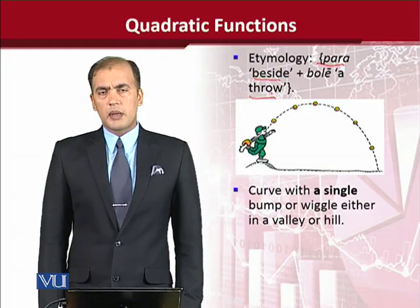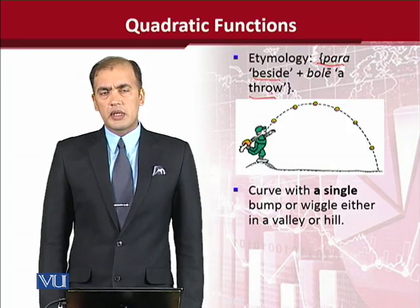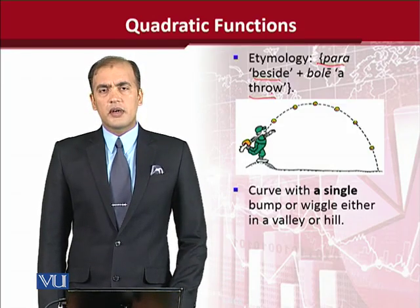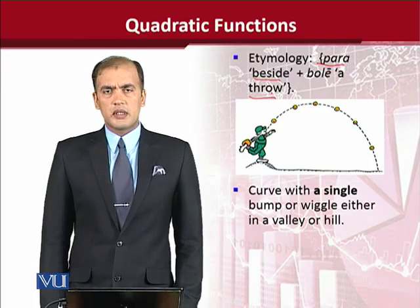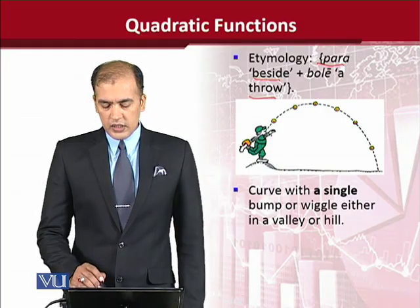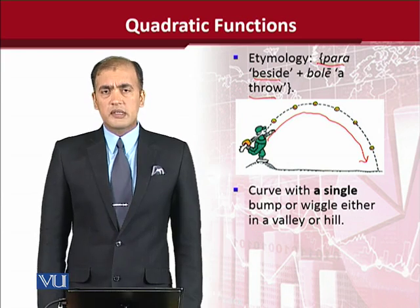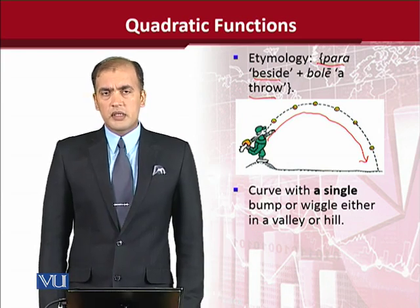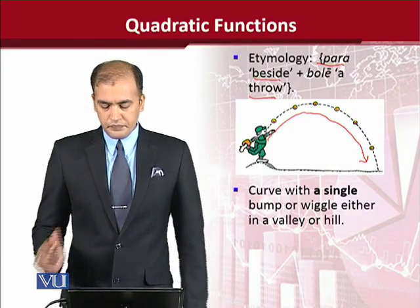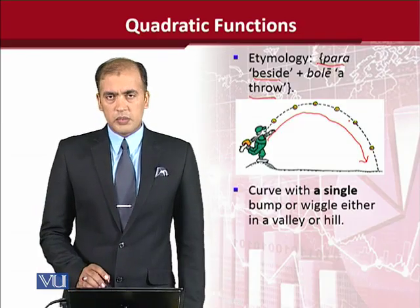When you see a baseball player or any cricket player throwing a ball in the air, it takes a certain sort of curve until its landing on the earth, and that is something like what you can see in the diagram. It is a sort of half circle — but not necessarily a half circle; just for the sake of understanding, you can say it is quite similar to a half circle. This shape is known as a parabola.